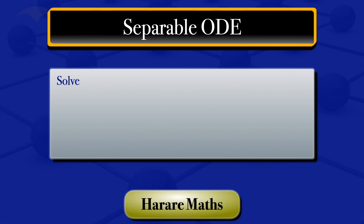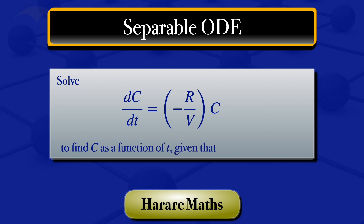In this video, I'm going to solve the differential equation: the derivative of C with respect to T is equal to minus R divided by V multiplied by C. I will solve it so that I find C as a function of T, given that C is equal to C₀ when T is equal to 0.